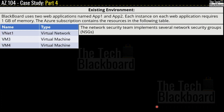Blackboard uses two web applications named App1 and App2. Each instance of each web application requires 1 GB of memory. The Azure subscription contains resources including VNet1 (virtual network) and VM3 and VM4 (virtual machines). The network security team also implements several network security groups, also known as NSGs.